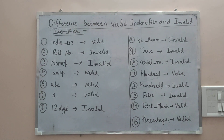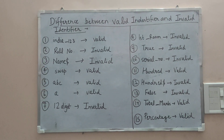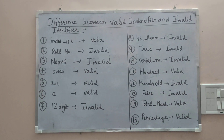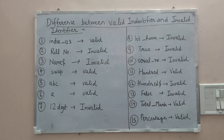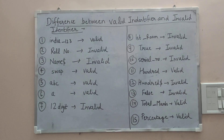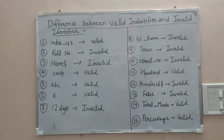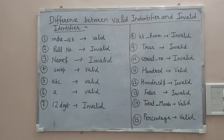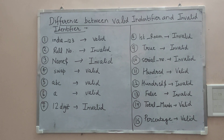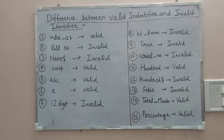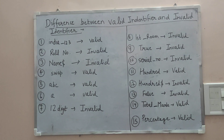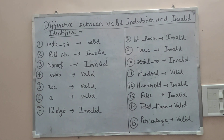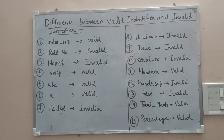In this video we find out which identifiers are valid and which are invalid. In the previous video we discussed what exactly an identifier is and what rules we follow to determine valid or invalid identifiers. These are the 15 identifiers I am writing here — some are valid and some are invalid.